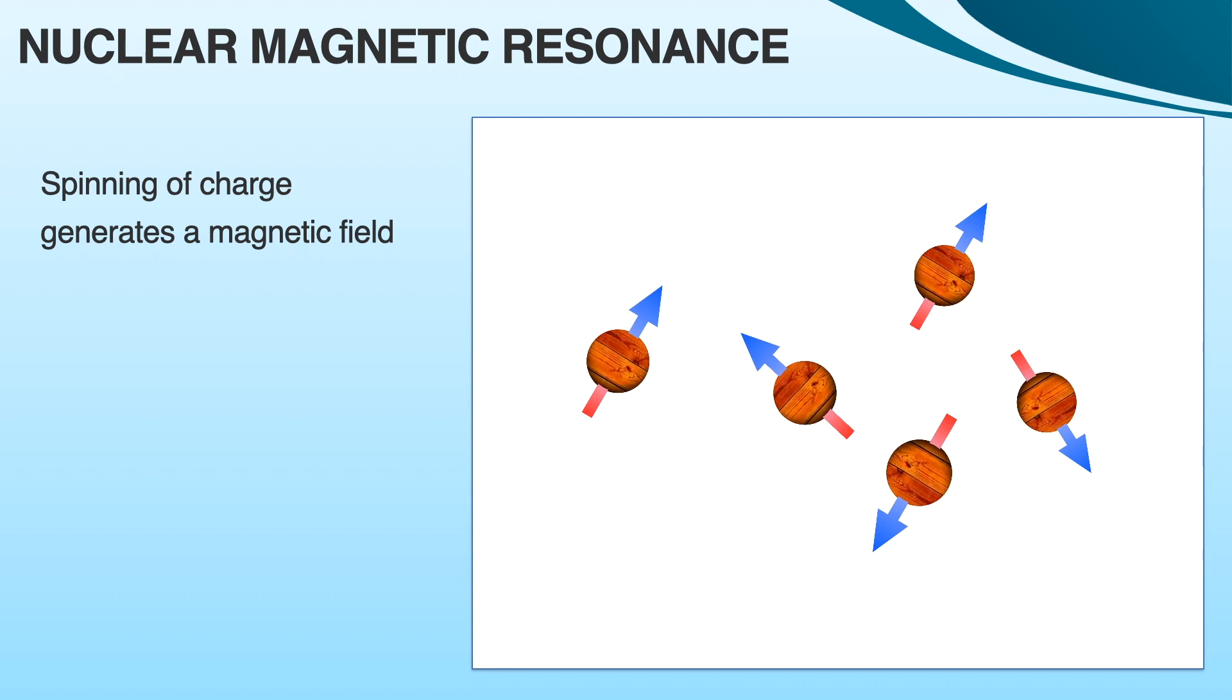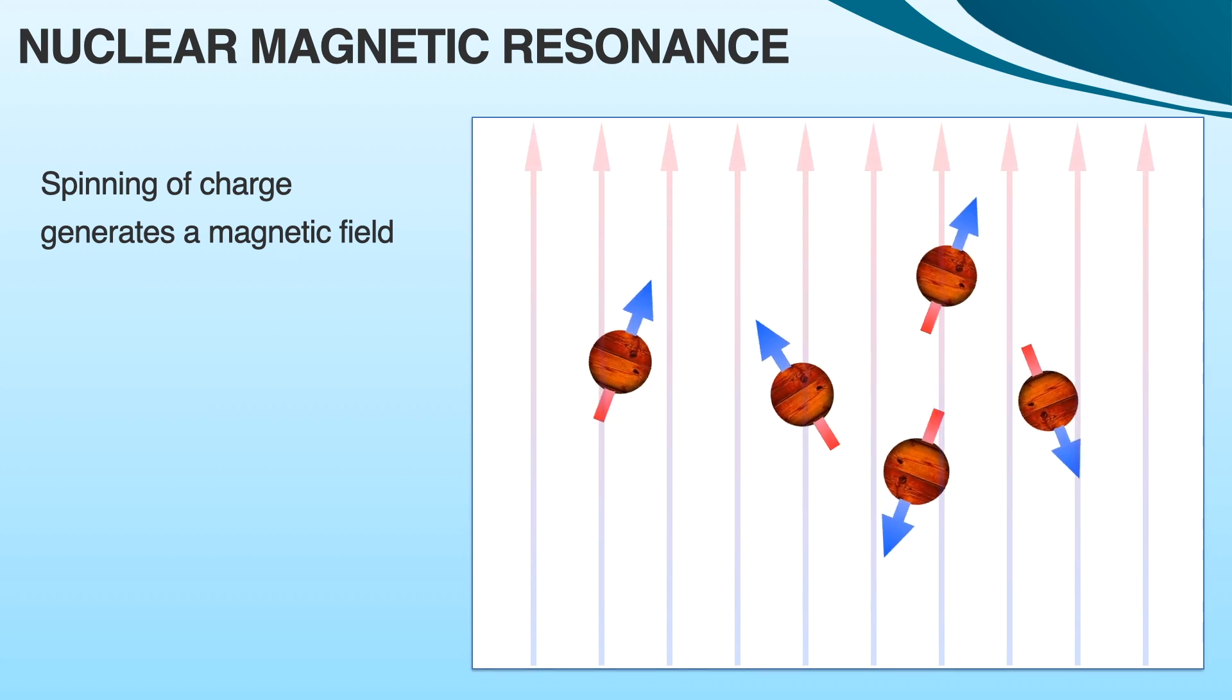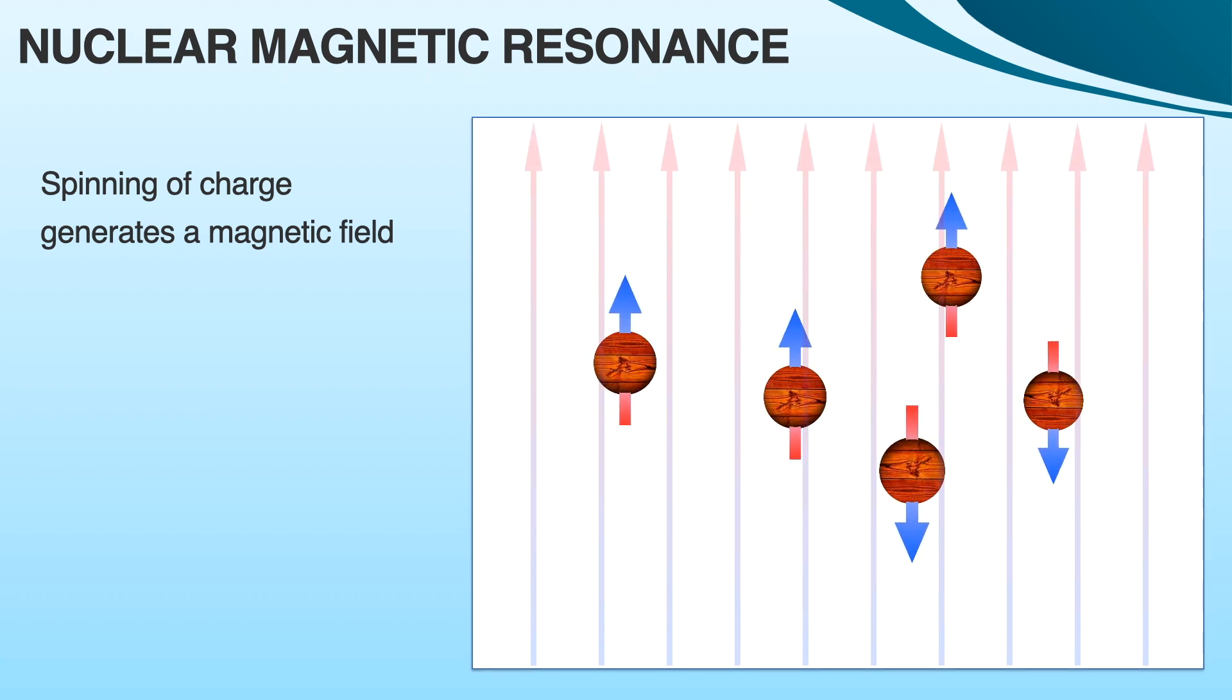These magnetic nuclei are randomly oriented in space, but when an external magnetic field is applied, they tend to orient themselves in the direction of the magnetic field. In presence of external magnetic field, there are two possibilities: the spinning nuclei can orient themselves in the direction of the external magnetic field, that is with the field, or in the direction opposite to the magnetic field, that is against the field.